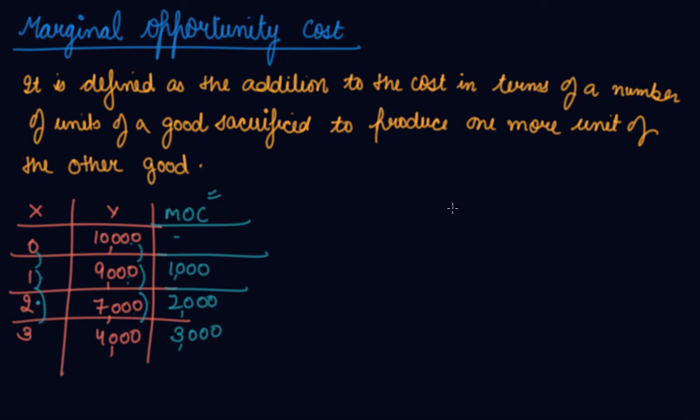The marginal opportunity cost is calculated in terms of units, the number of units. Whereas the marginal rate of transformation was your rate, your change of Y to the change of X. This was your MRT, the ratio. But here your marginal opportunity cost is in the units.